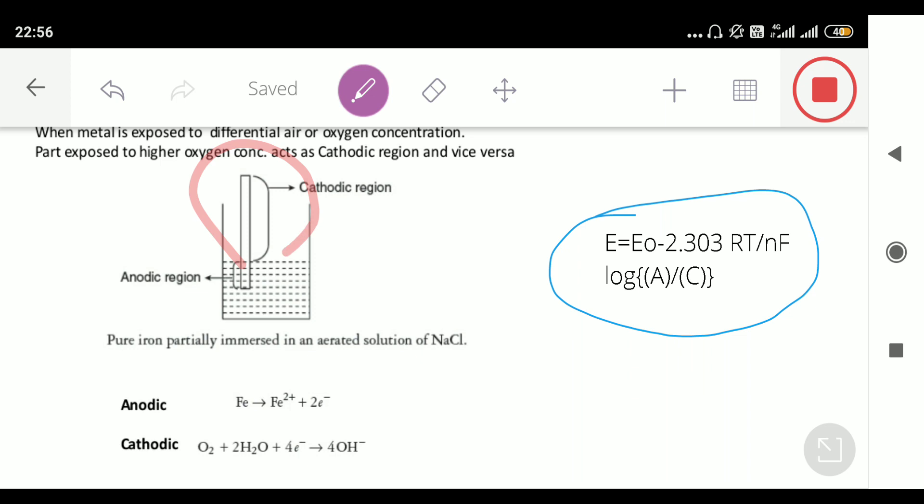This part is going to be cathodic because the cell is feasible only when cathodic part is more concentrated than the anodic part. So in this case, this part behaves as anode and this behaves as cathode, so corrosion of only that part will take place which is immersed in water.